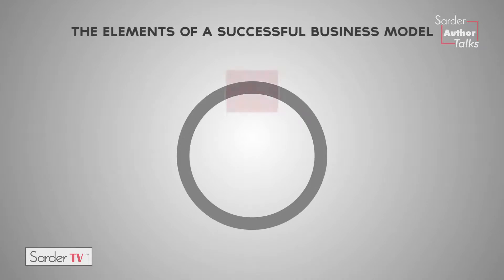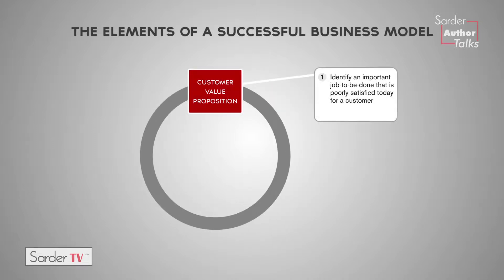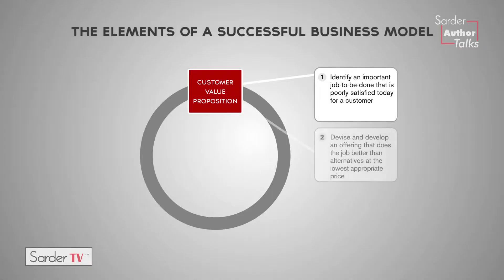What are the four key elements needed to create a successful business model? The first is a customer value proposition, which has two parts. One is: what is the fundamental job or need a customer is trying to get done? It needs to be important and unsatisfied for there to be an opportunity to serve it. The second part is: what is the product or service that can address that job?